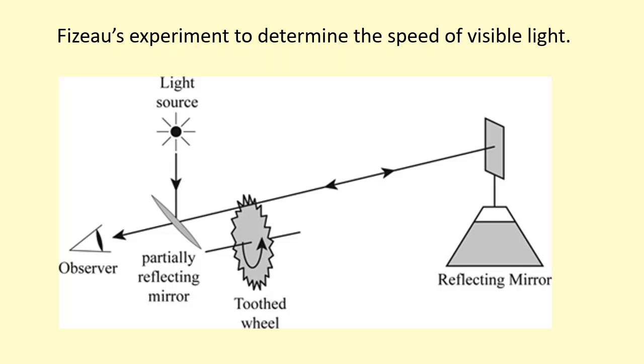This is Fizeau's experiment to determine the speed of visible light. He has a light source over here. It's emitting light and it reflects off this partially reflecting surface and it has to go through one of the gaps in this toothed wheel.